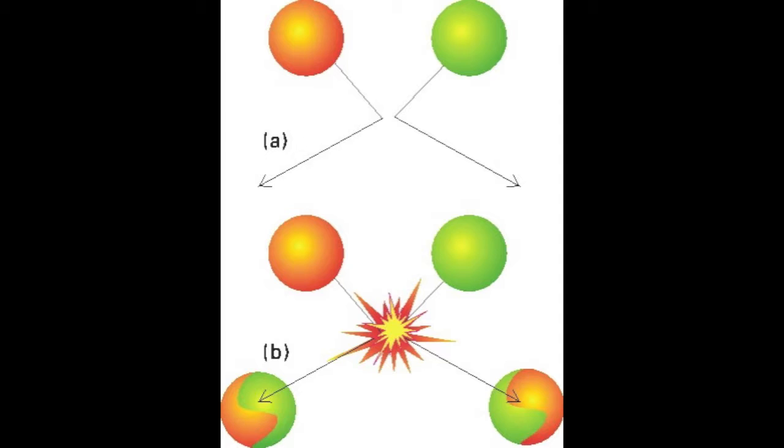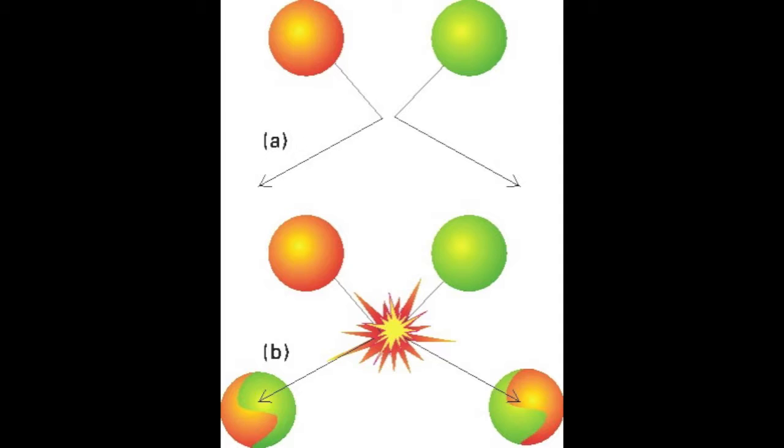Nice try Anna, but maybe you should stick to accounting. Collision can go in two ways as seen in the image. If the collision is, as the textbook puts it, insufficiently vigorous, then the molecules will simply bounce off of each other unchanged. But if the collision is sufficiently vigorous as seen in B, then the molecules will react. A way to further explain this is to look at a reaction profile.